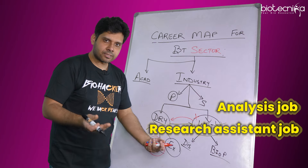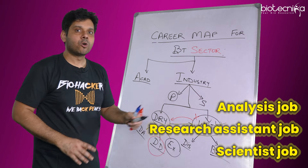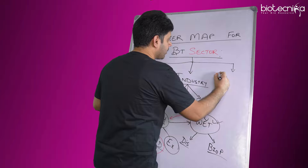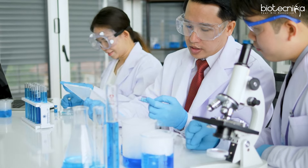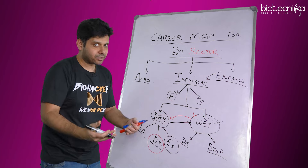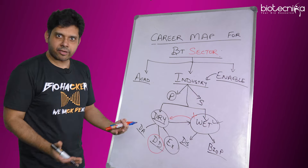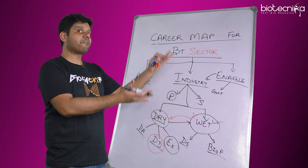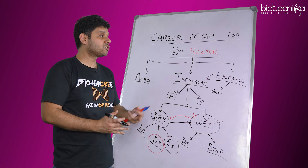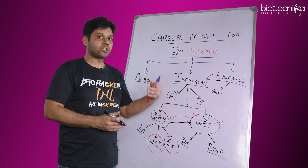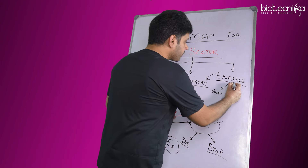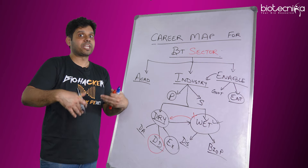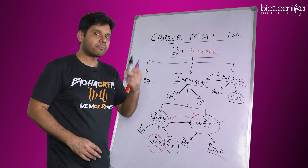In the wet lab, you can get analysis jobs, research assistant jobs, or scientist jobs — I have already created a biotech career ladder video for that. The third type of jobs are called enablers — they enable the industry. There are two types: government employees working in the biotech sector (in India, the Department of Biotechnology, BIRAC, and DST), or entrepreneurs who start their own company where all of this happens.